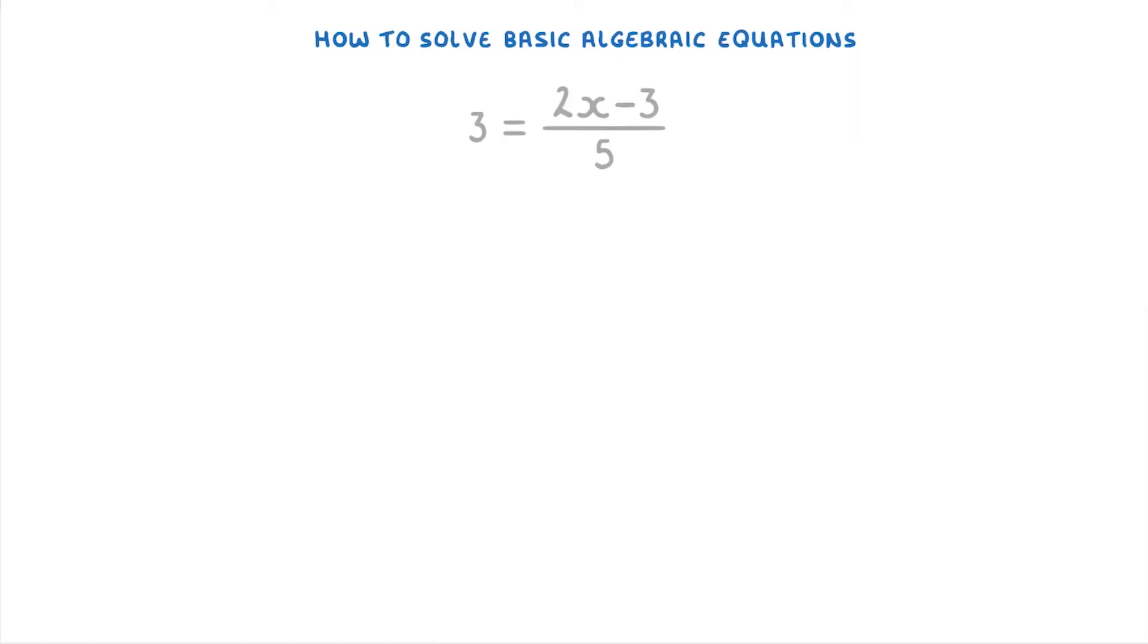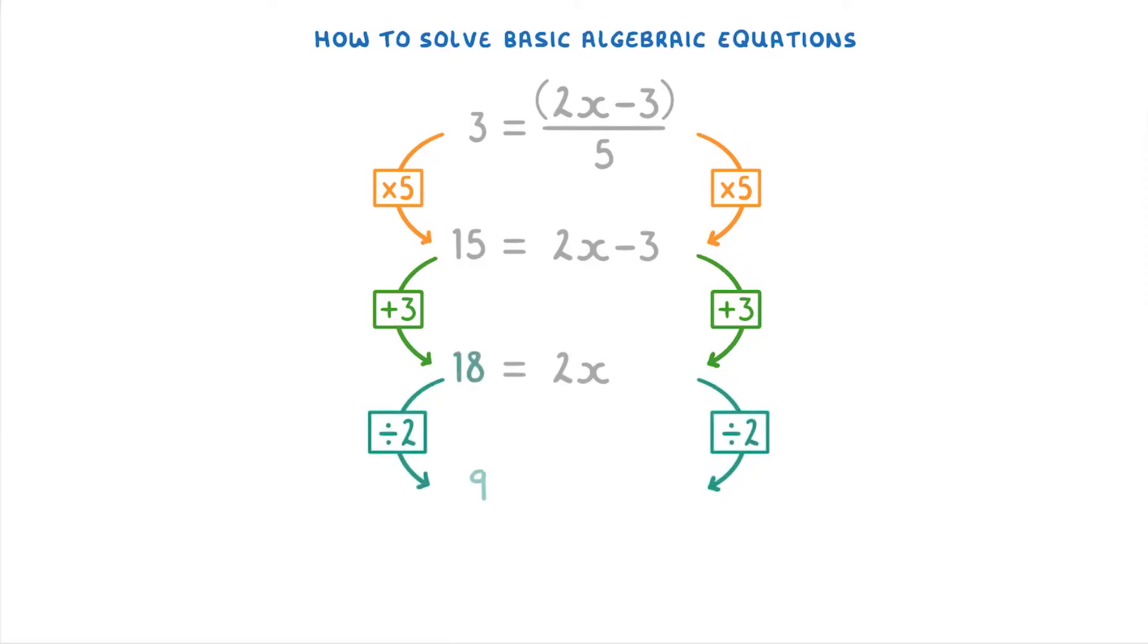Let's try one more question that uses all of the rules we've covered so far. For this one, it's the 2x minus 3, which is effectively in a bracket, because the whole thing is being divided by 5. So the first thing you need to do is get rid of the fraction by multiplying both sides by 5, which gives you 15 equals 2x minus 3. Next, you can add 3 to both sides to get 18 equals 2x. And finally, you can divide both sides by 2 to find that 9 equals x. So x is 9.